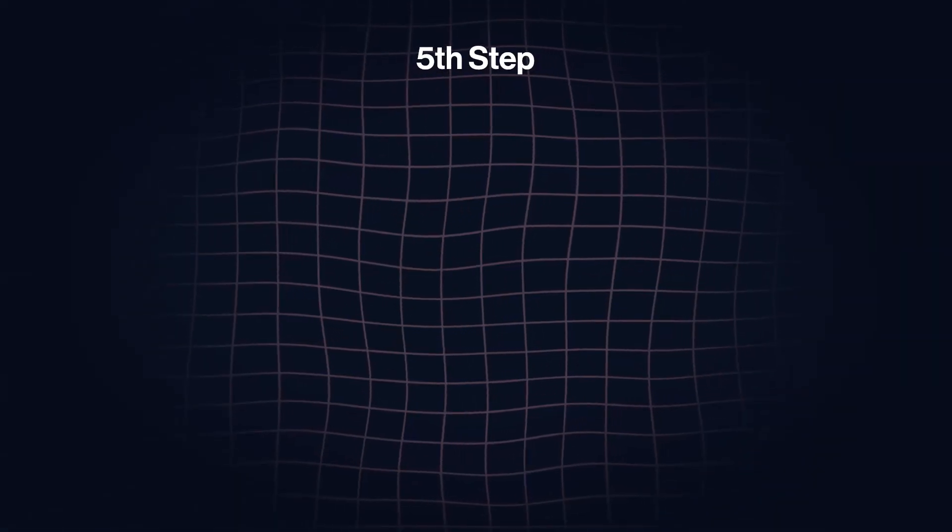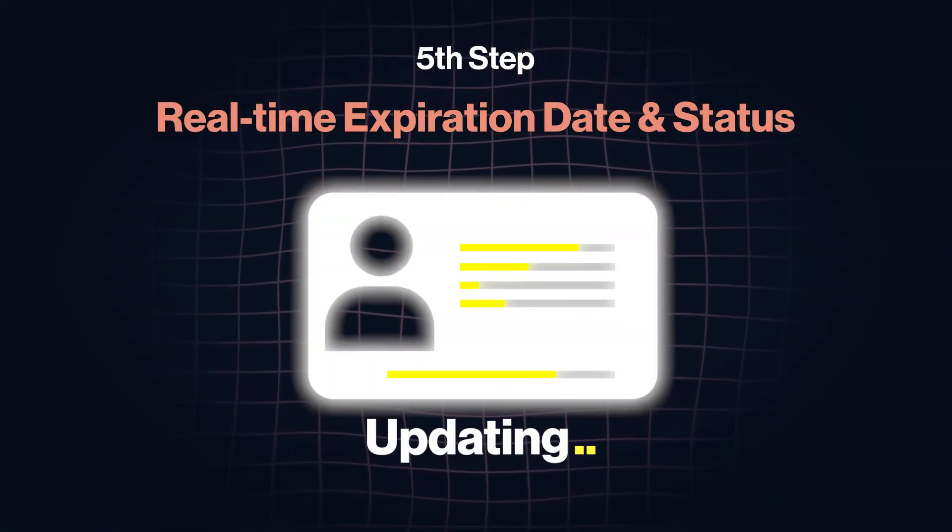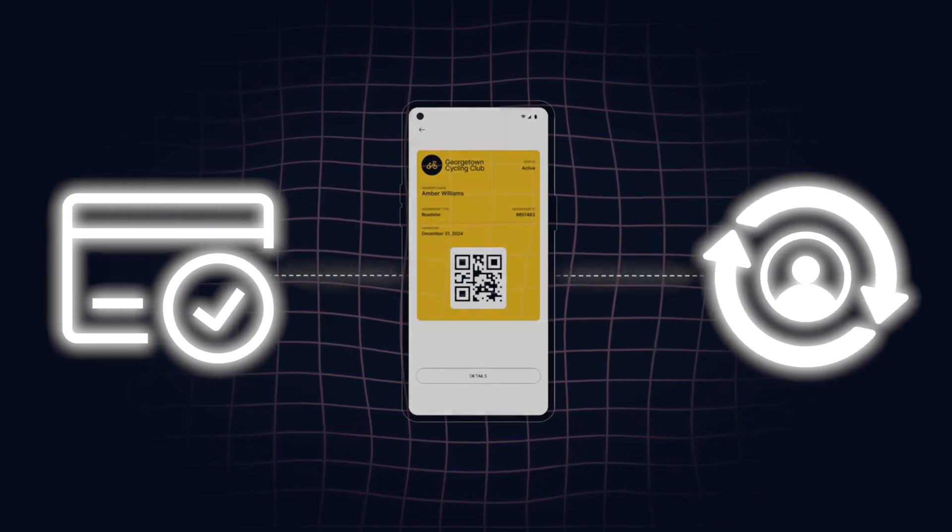Customization five is including a real-time expiration date and status — something that old physical membership cards can't come close to providing. When a membership changes status or has an updated expiration date, like someone making a payment or renewing, we push that information to the digital membership card. This is a powerful way to know that when someone presents a digital membership card, it's up to date with real-time information. Those are five ways you can customize your digital membership cards to modernize your member experience.